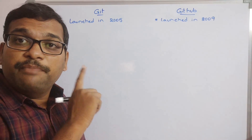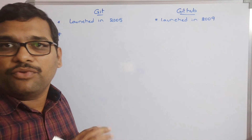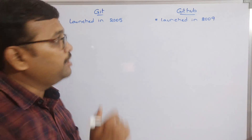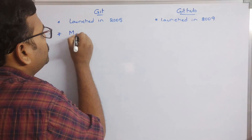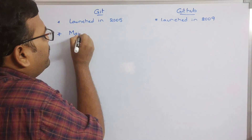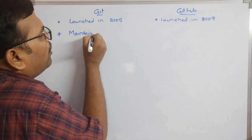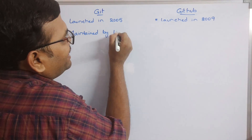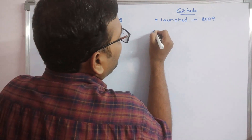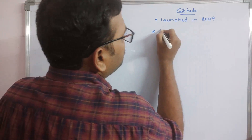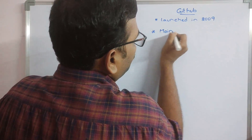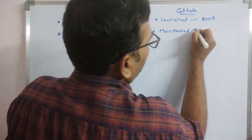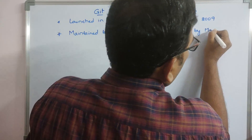Git is maintained by the Linux environment — it is owned by Linux. And GitHub is maintained by Microsoft.